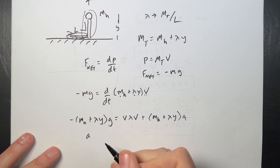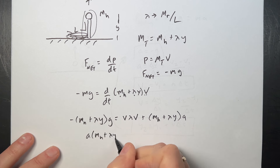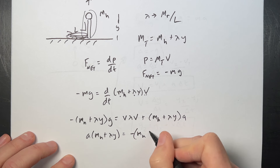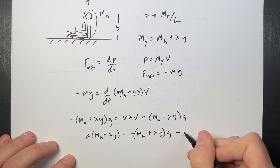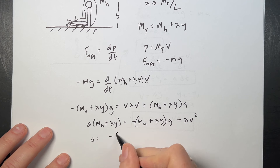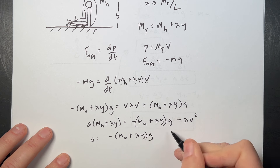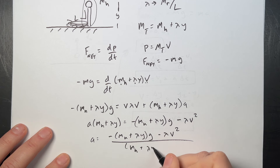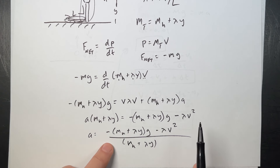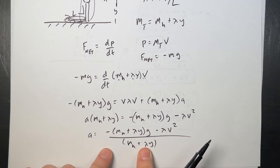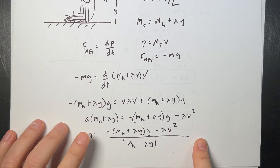Solving for a: a·(mh + λy) equals negative (mh + λy)·g minus λv². So the acceleration equals [−(mh + λy)·g − λv²] divided by (mh + λy). Quick sanity check: if lambda is zero, those terms cancel and I get negative g. That's a good sign. Now I can model this because I have a non-constant acceleration — calculate it each time step, use it to find new velocity and position.